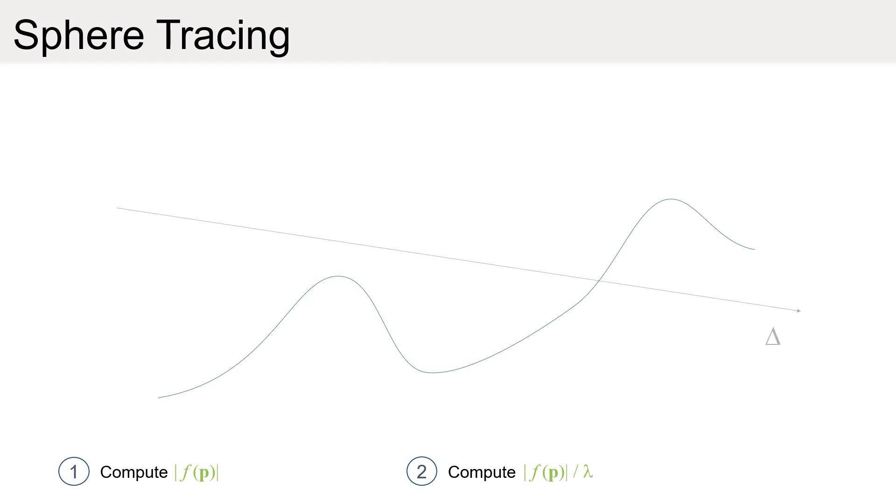Sphere tracing is a well-known method for ray tracing implicit surfaces. An important limitation of this method is that it relies on a global Lipschitz bound only, which reduces the overall performance.